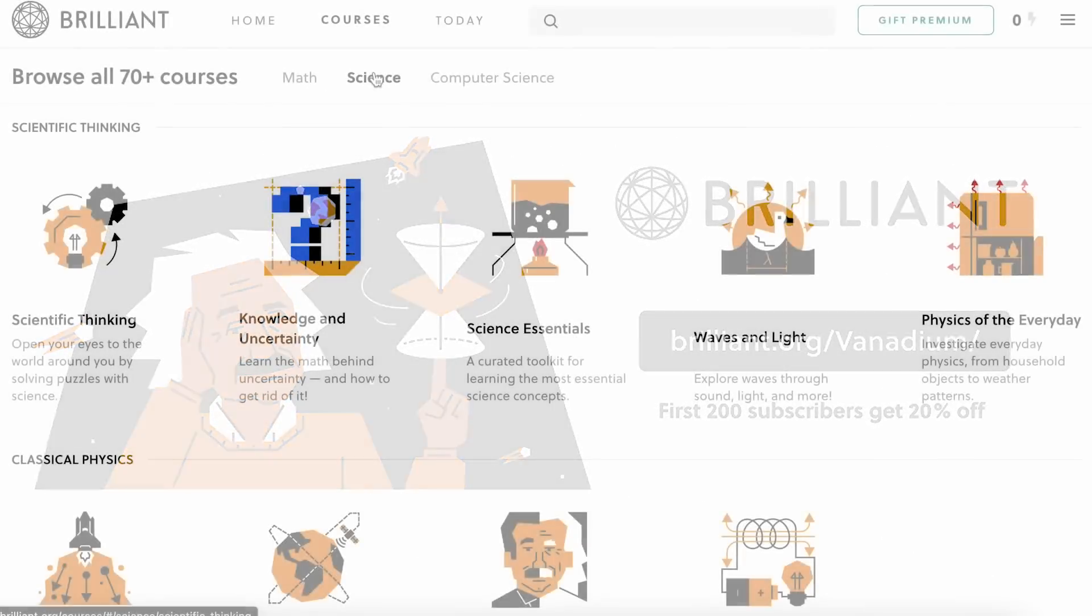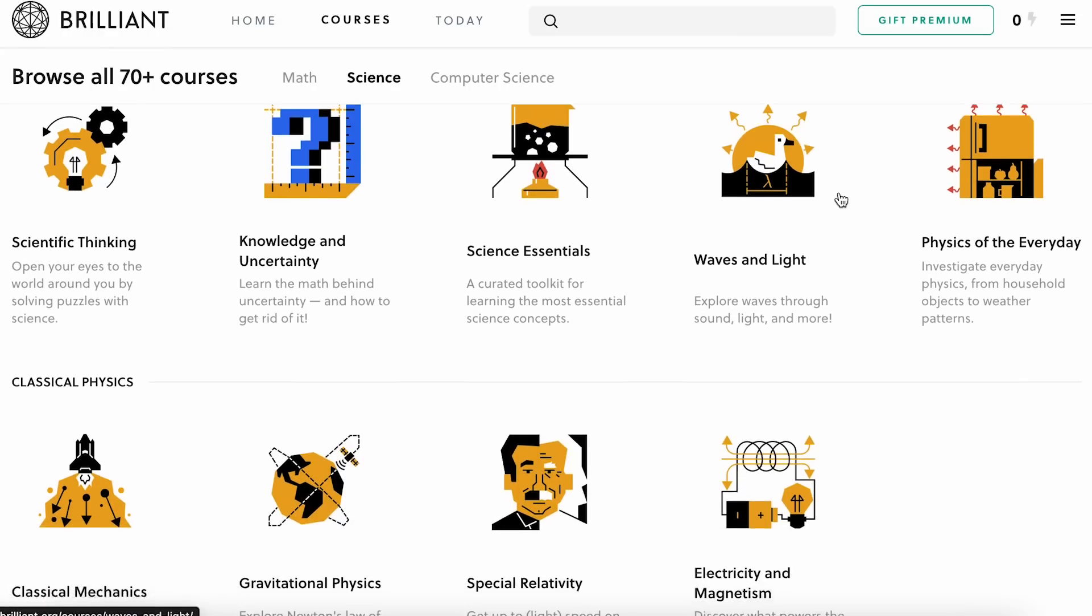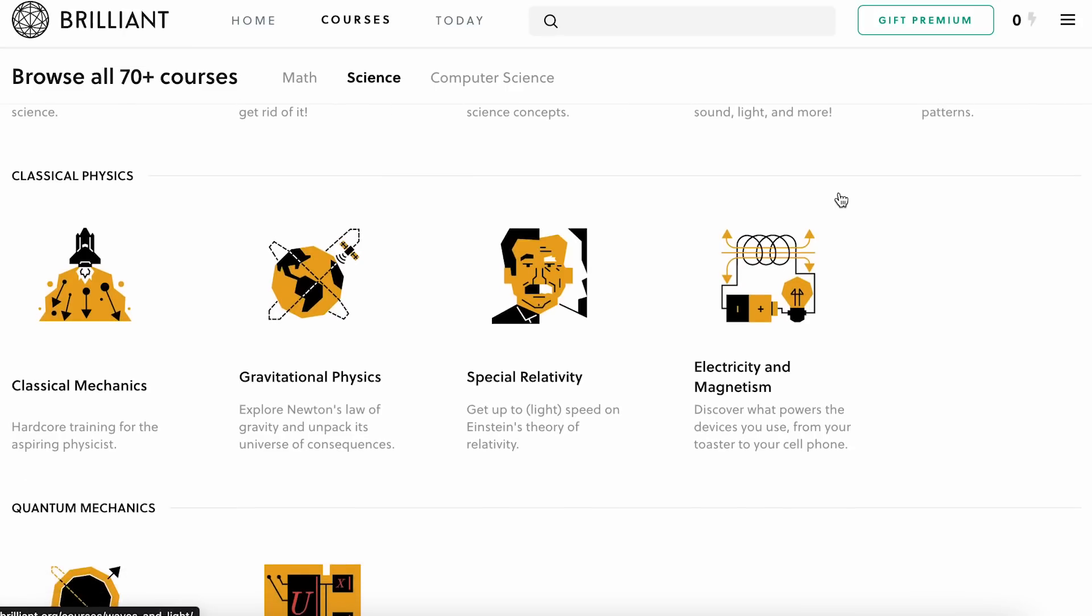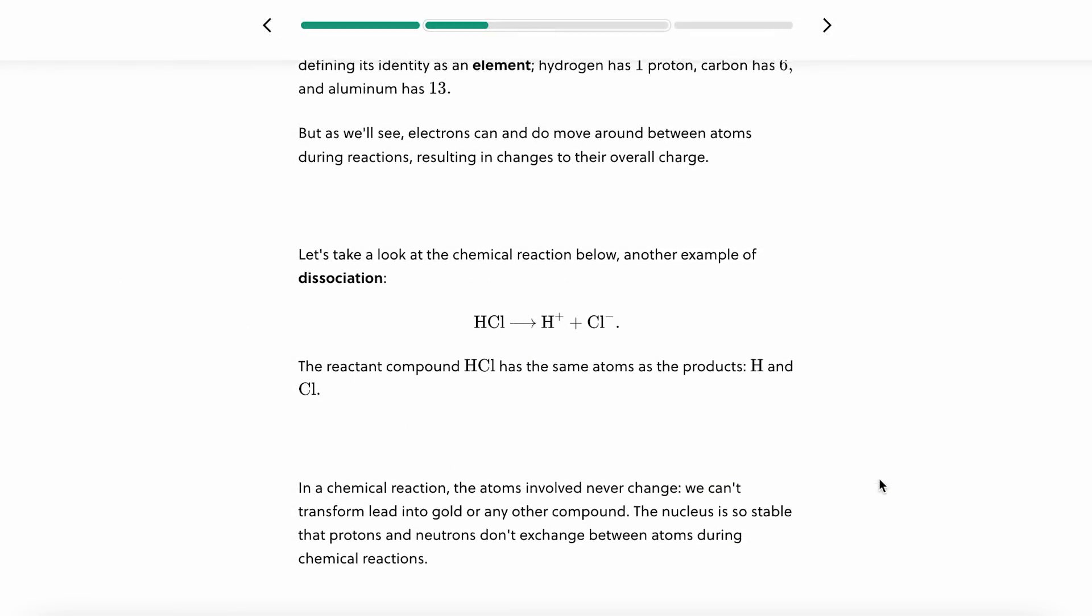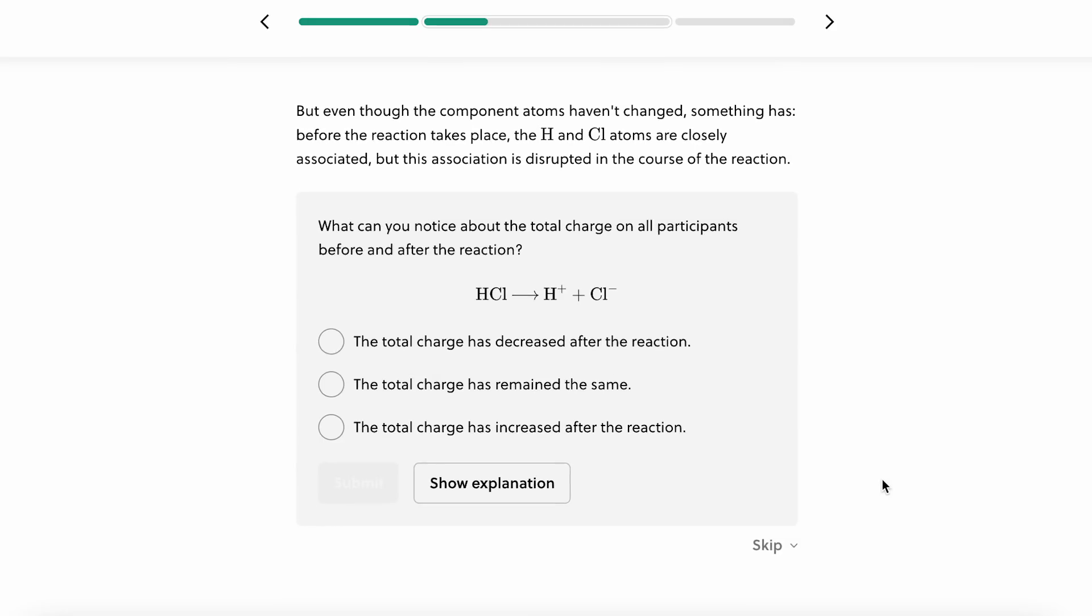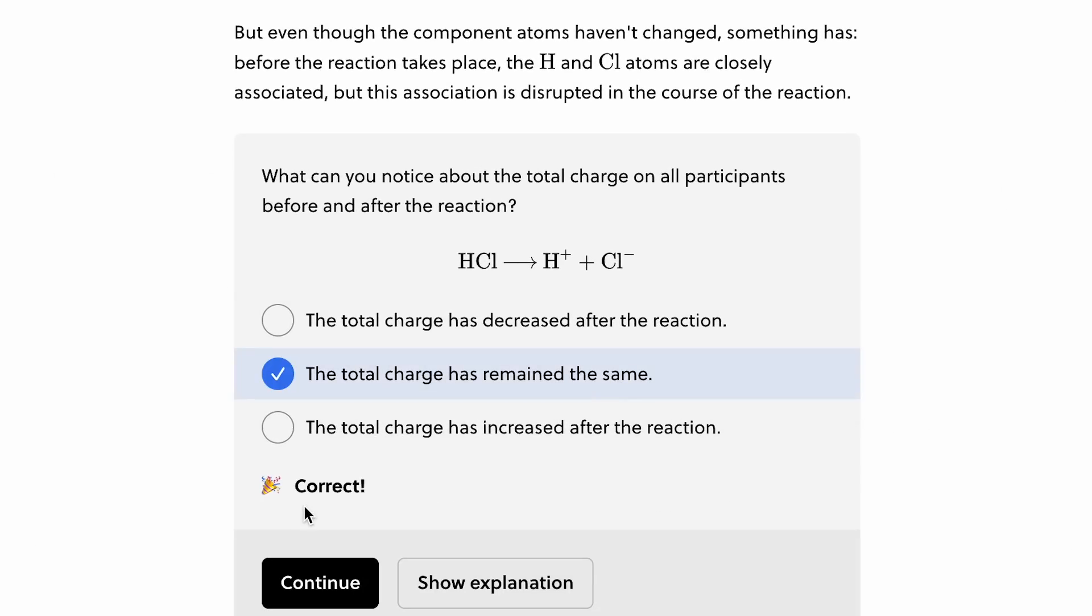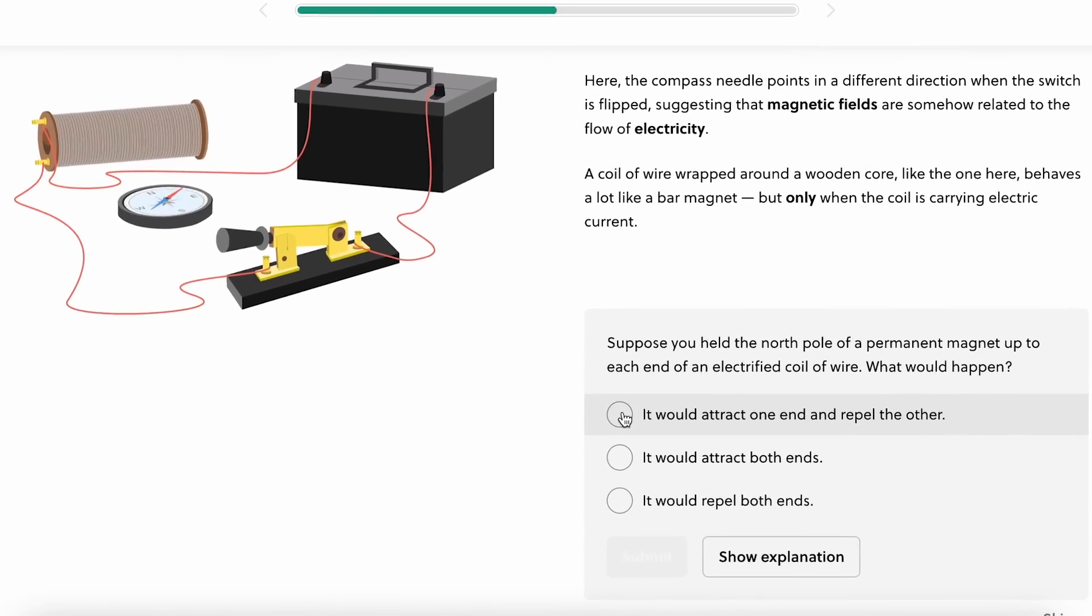Brilliant offers a number of courses that really help with understanding the physics, chemistry, and engineering involved in the lithography process used in ASML's machines. Their course, the chemical reaction will give you a primer on the chemistry involved when extreme ultraviolet light reacts with photoresist coatings during the lithography process. They have a great class, electricity and magnetism, that will teach you the basics of how circuits and transistors work.